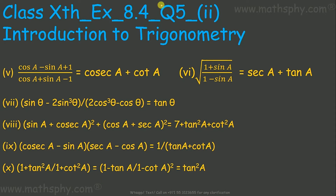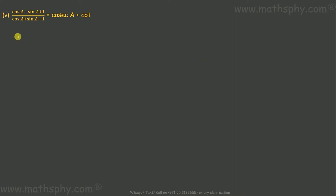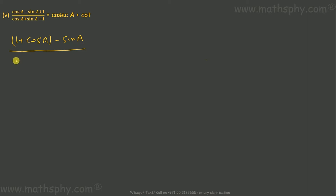These ones here — continuation from question number 5, with 5 more equations to solve. First one here, let's take this up. This is cos a minus sin a plus 1. Can I write this as (1 plus cos a minus sin a) over (minus 1 plus cos a plus sin a)?